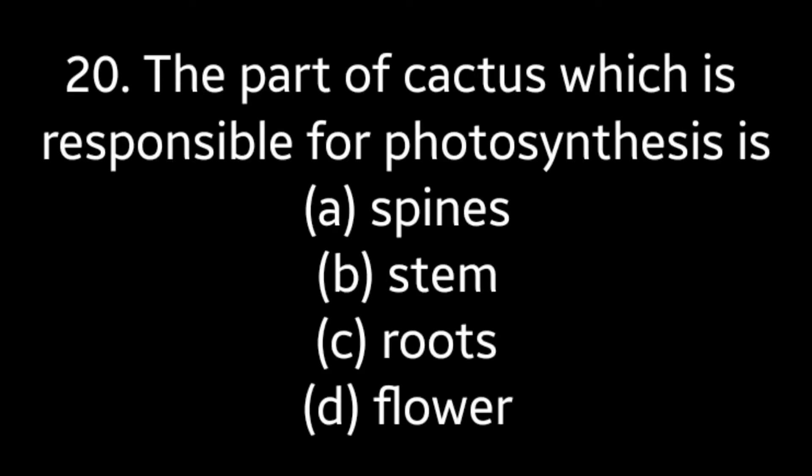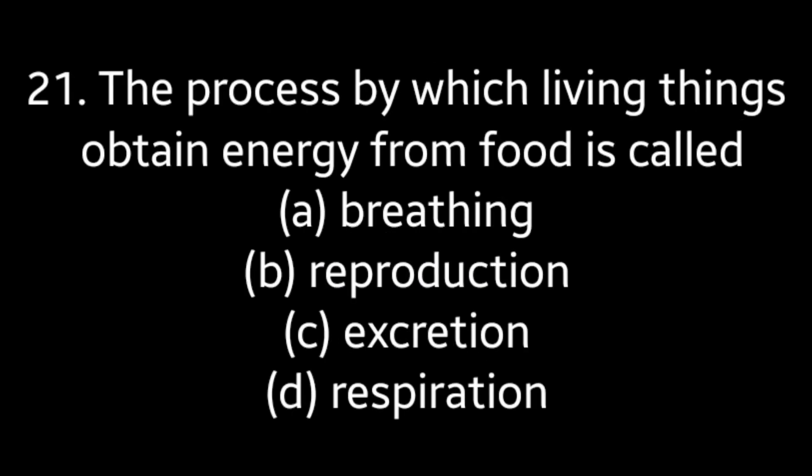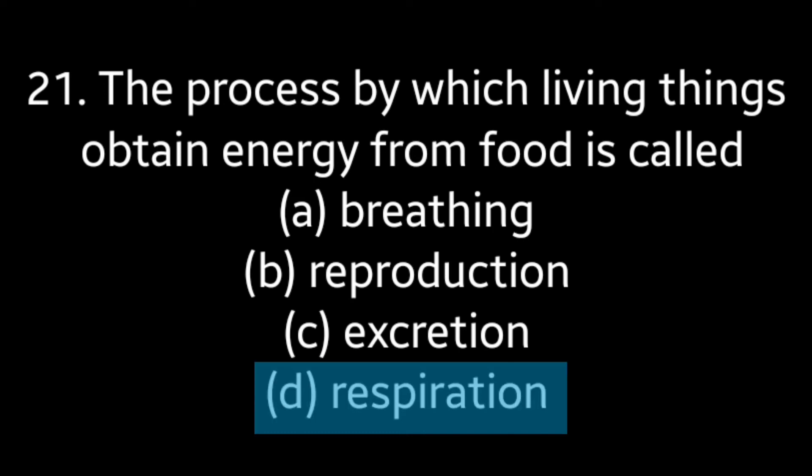Question number 20: The part of cactus which is responsible for photosynthesis is — option A: spines, option B: stem, option C: roots, option D: flower. Answer is option B: stem. Question number 21: The process by which living things obtain energy from food is called — option A: breathing, option B: reproduction, option C: excretion, option D: respiration. Answer is option D: respiration.